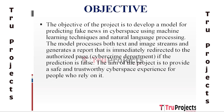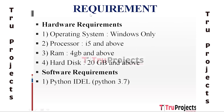The objective of the project is to develop a model for predicting fake news in cyberspace using machine learning techniques and natural language processing. The model processes both text and image streams and generates a report that is immediately redirected to the authorized cybercrime department page if the prediction is false. The aim is to provide a safe and trustworthy cyberspace experience for people who rely on it.